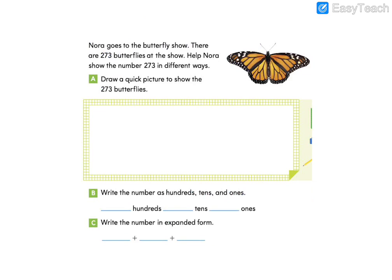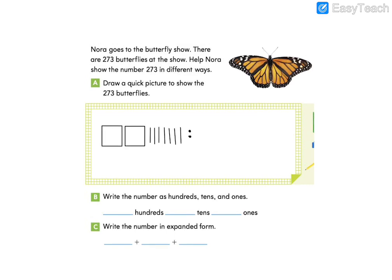Let's look at the next problem. Nora goes to the butterfly show. There are 273 butterflies at the show. Help Nora show the number 273 in different ways. Letter A asks you to draw a quick picture to show 273 butterflies. Go ahead and do that now. Your picture should look something like this. Let's go ahead and fill in letter B now. We have two hundreds, seven tens, and three ones.